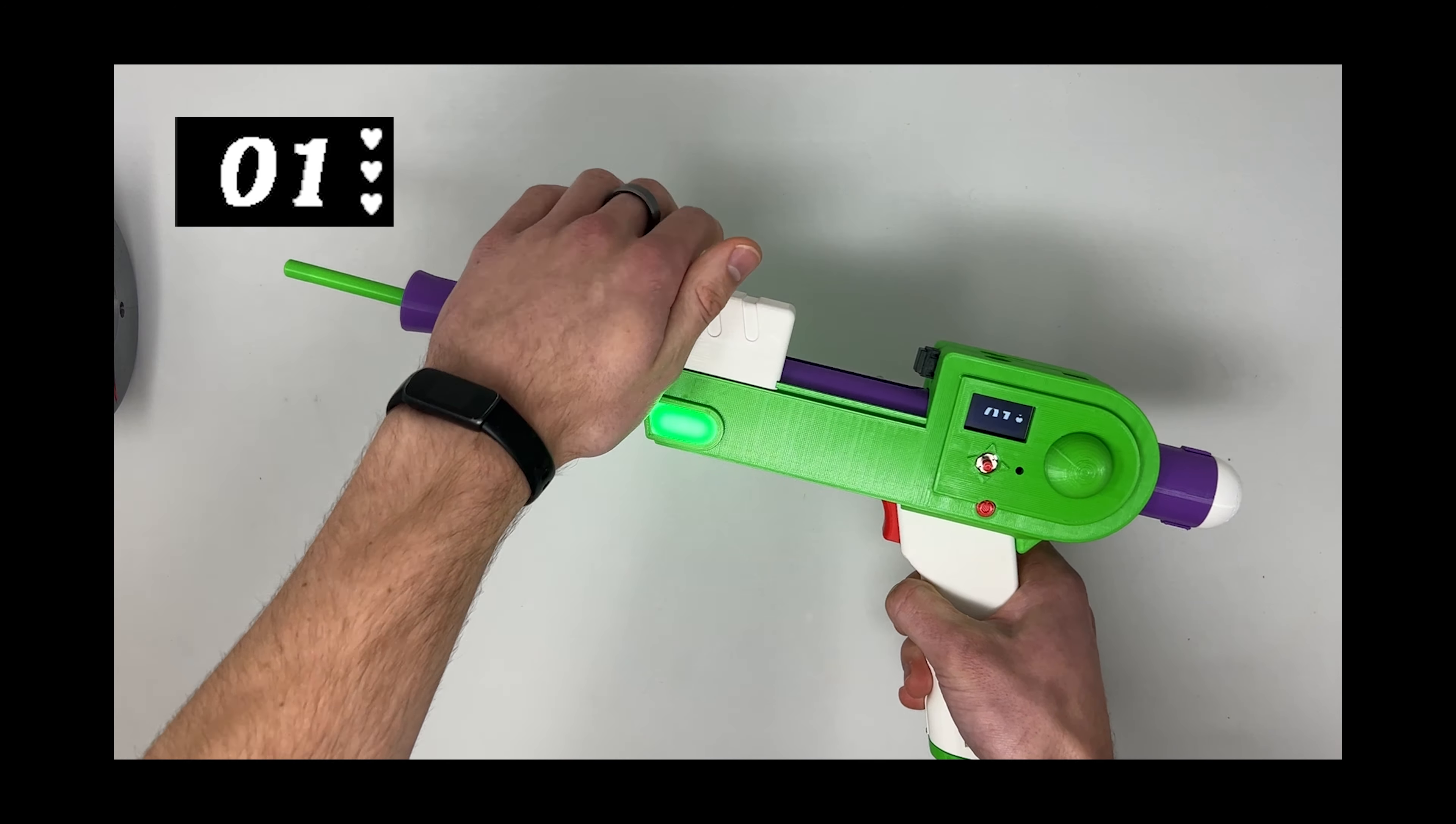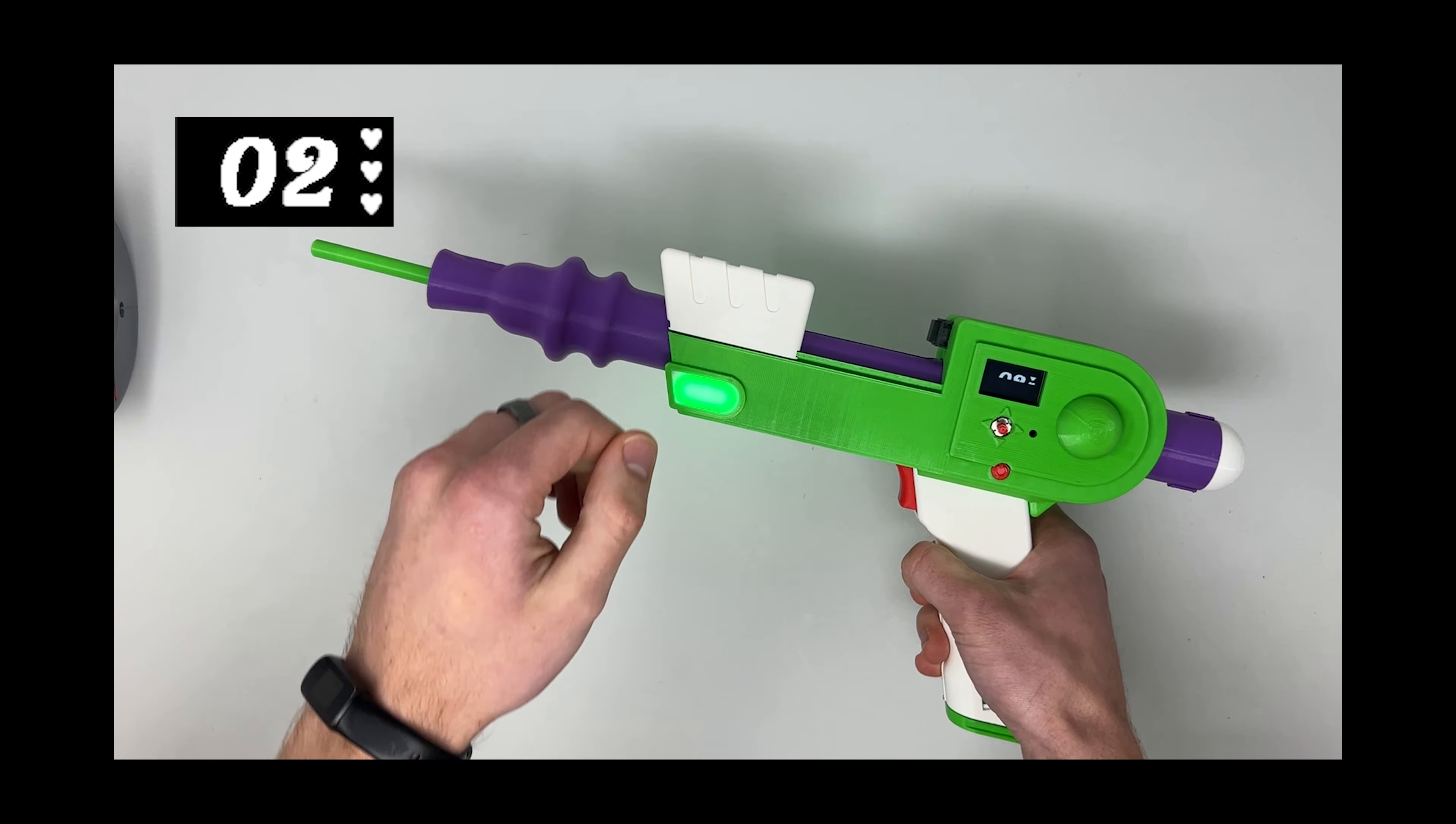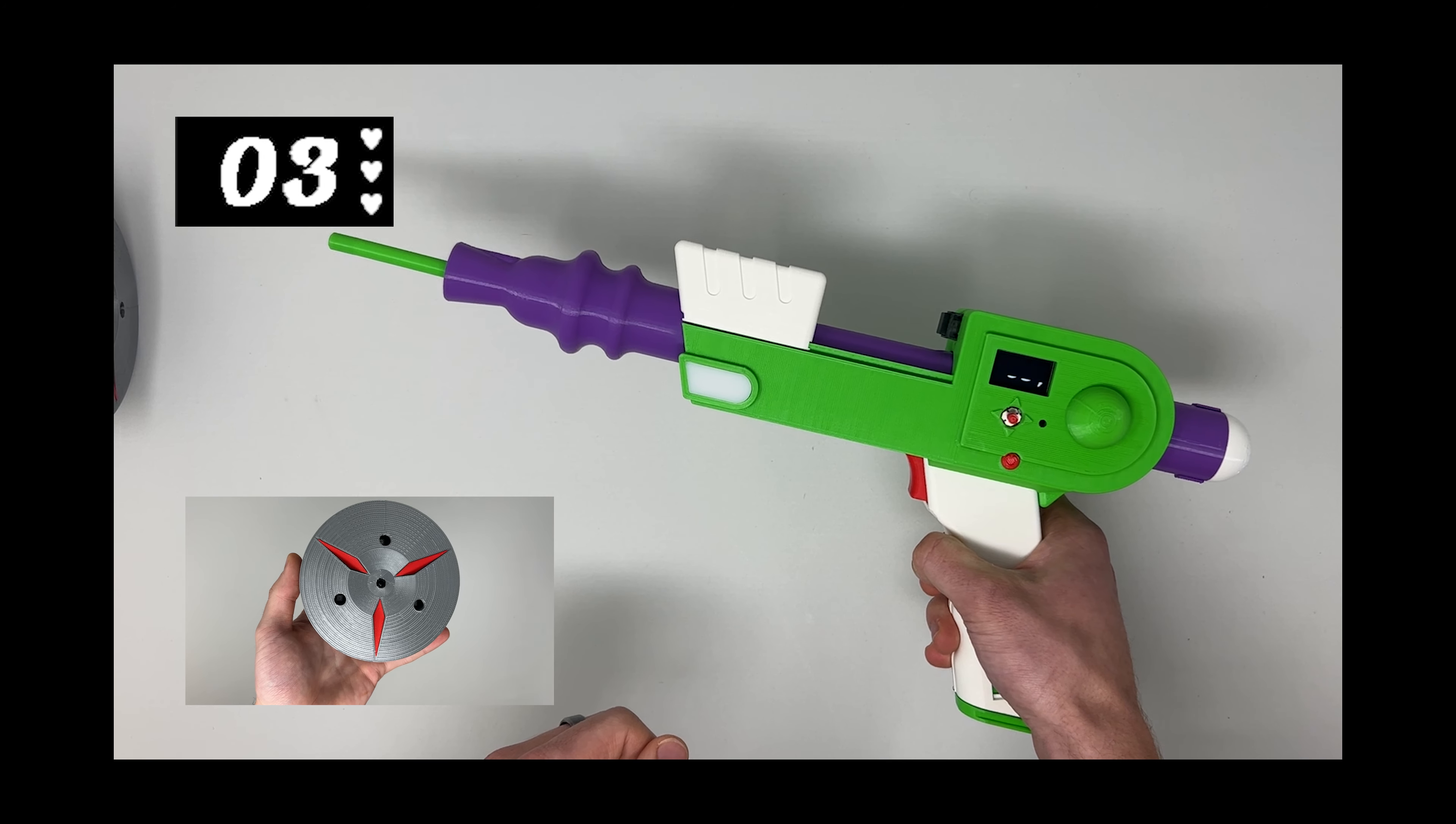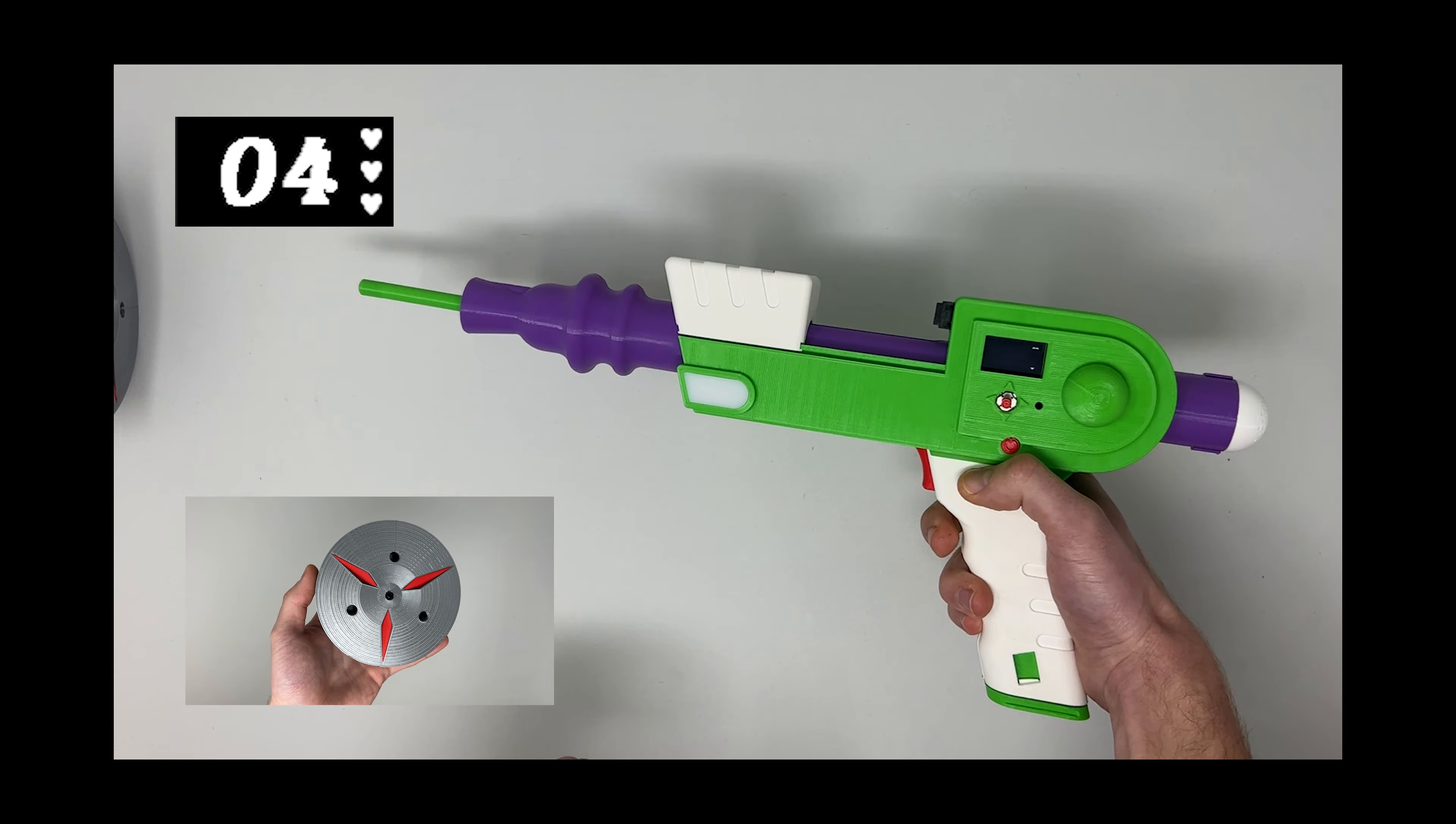Next there's Lock and Load. This requires pulling the slider at the top of the blaster back in order to prime it. Last there's Blast them Partner. Here's where you take your aim at the target and pull the trigger.